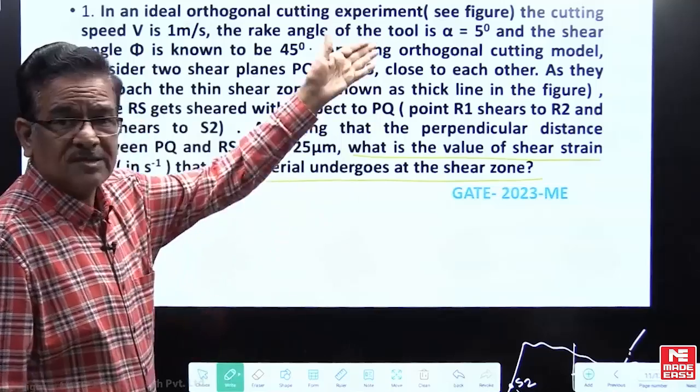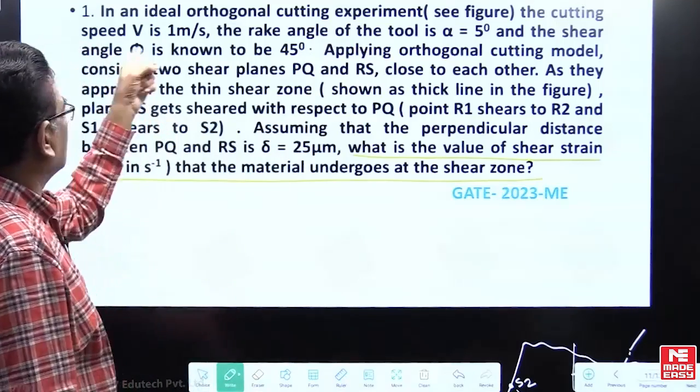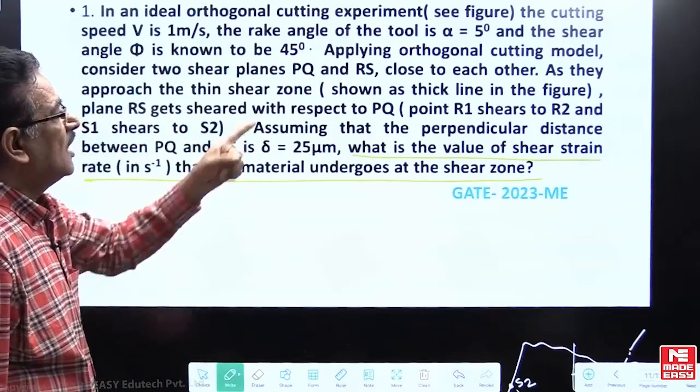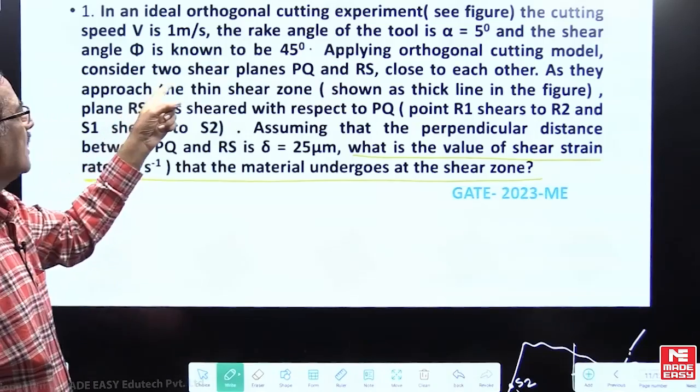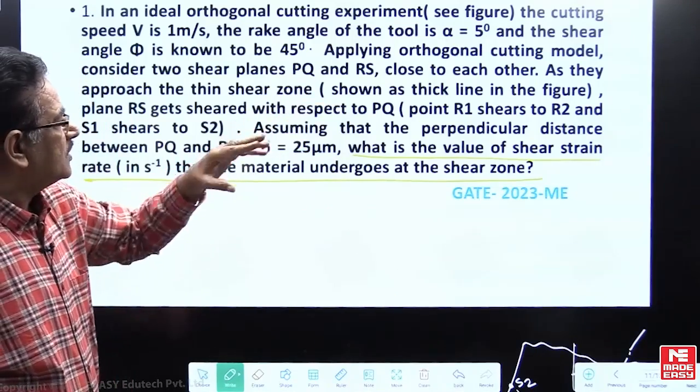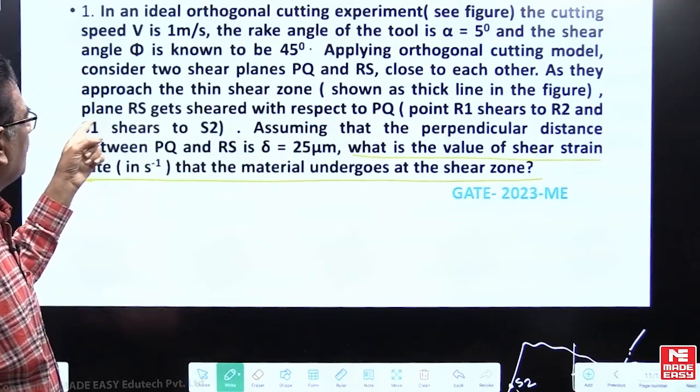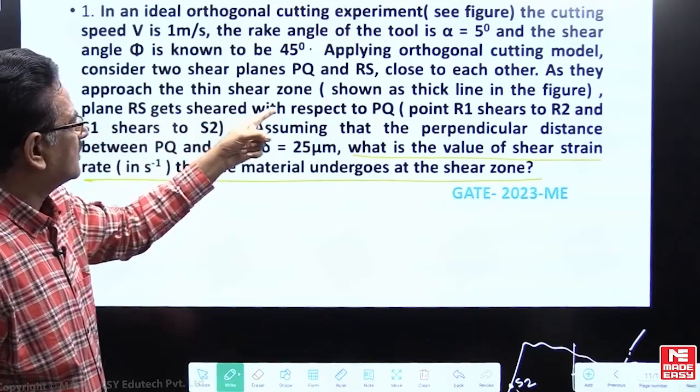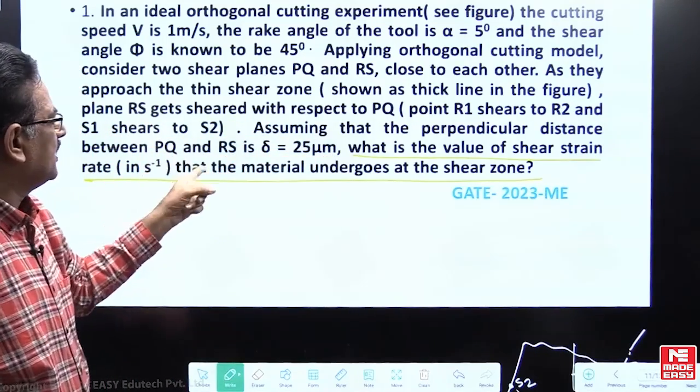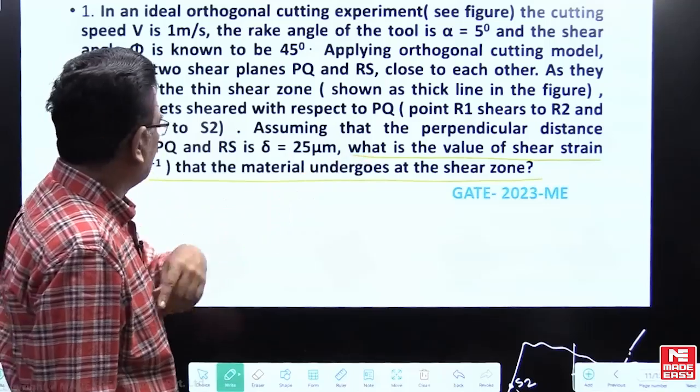Ideal orthogonal cutting experiment, some diagram is given and with reference to that diagram, some description is also given. Cutting speed is 1 meter per second, rake angle of the tool is 5 degrees, and the shear angle is known to be 45 degrees. Applying orthogonal cutting model, consider two shear planes PQ and RS, close to each other. As they approach the thin shear zone shown as a thick line in the figure, the plane RS gets sheared with respect to PQ, point R1 shears to R2, point S1 shears to S2. Assume that the perpendicular distance between PQ and RS is delta equals 25 micrometers. What is the value of shear strain rate?